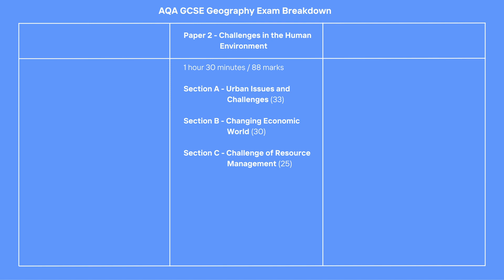Section C is the final section, and it is a little different. It is about the Challenge of Resource Management. You must answer Question 3, for a total of 12 marks. Then you choose either Question 4, about food, or Question 5, about water, or Question 6, about energy. 13 marks are available. Check which one of the three topics you have specialised in.